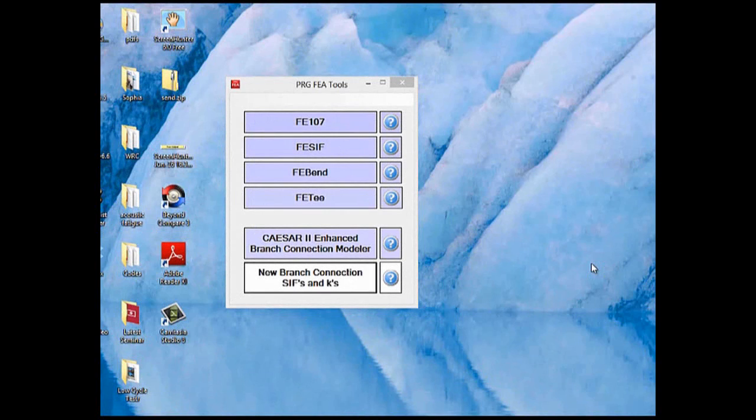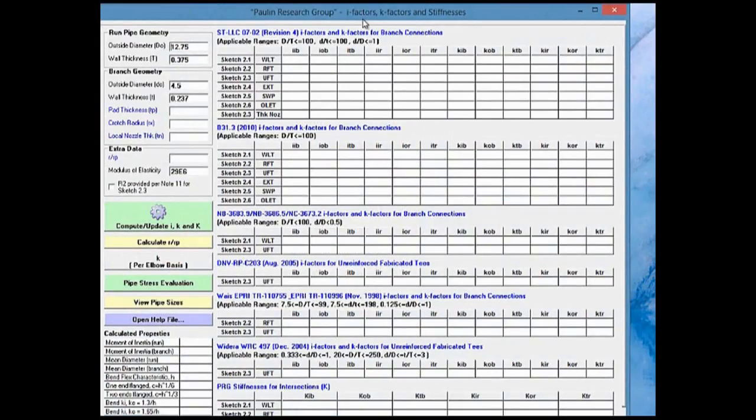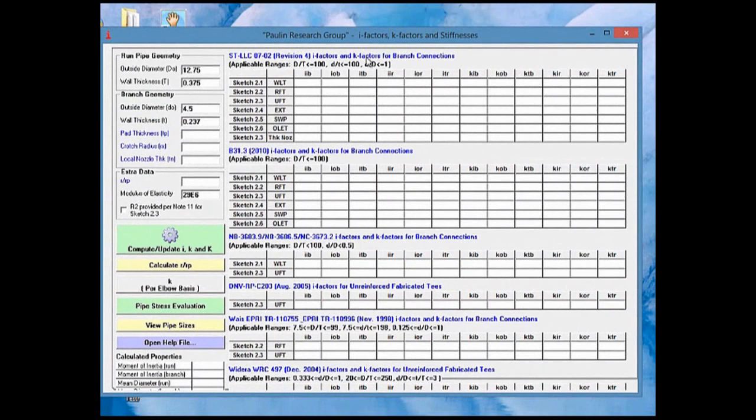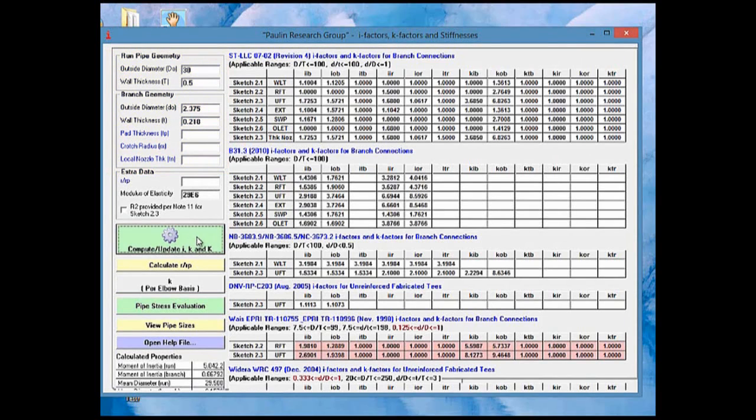And so we want to run the PRG-IK spreadsheet on our 30-by-2-inch branch connection. The PRG-IK spreadsheet is found on the bottom of the FEA Tools menu. The spreadsheet is quite large, so on a smaller screen you may have to make it smaller. So we'll enter the 30-by-0.5-inch run pipe we're analyzing. The branch, which is going to give us a potentially obviously silly result is 2.375 by 0.218. That's the extra strong branch pipe.